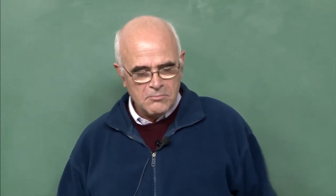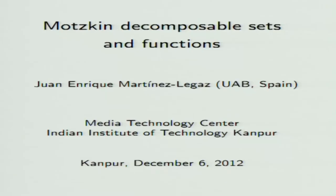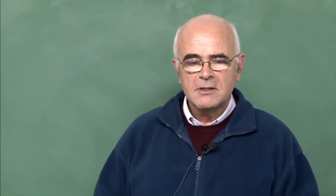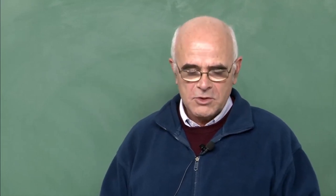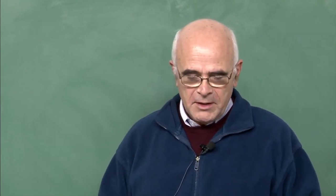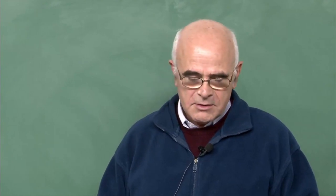The lecture today is going to be on Motzkin decomposable sets of functions. The notion of a Motzkin decomposable set was very recently introduced, although the name is after Motzkin, a well-known mathematician from the first half of the 20th century. The notion of Motzkin decomposable set is inspired by a result that is very well known in linear programming theory, which says that every convex polyhedron can be expressed as the sum of a polytope and a polyhedral convex cone — namely, the polytope generated by the extreme points of the set and the convex cone generated by the extreme rays of the set.